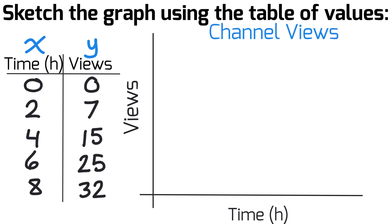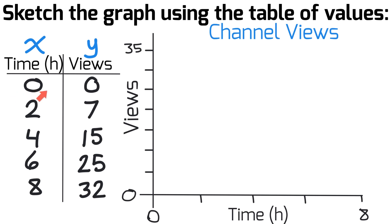If you haven't subscribed to this channel, please feel free to go ahead and do that. Now we're going to label our axes — on the x-axis we go from 0 to 8, and on the y-axis we go from 0 to 35. Now we identify and plot our coordinate points, beginning with (0, 0). Let's plot that point — just make a dot that's easy to see.